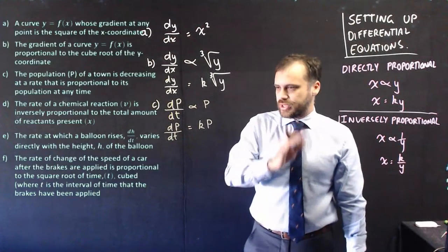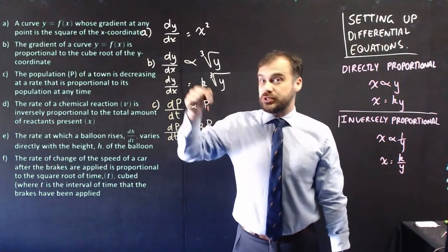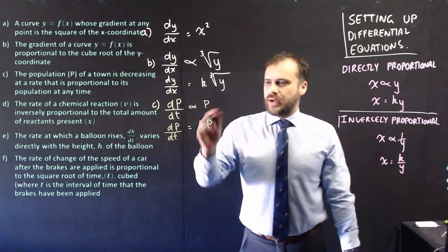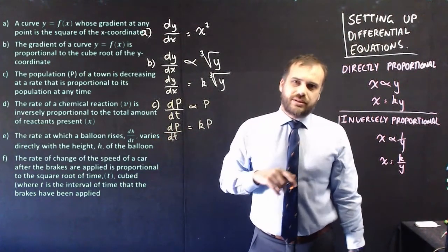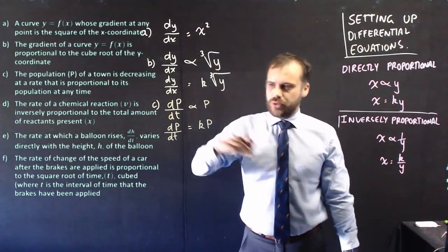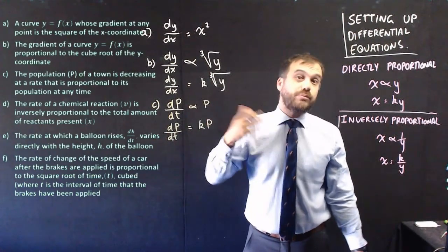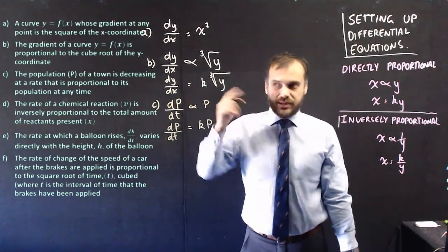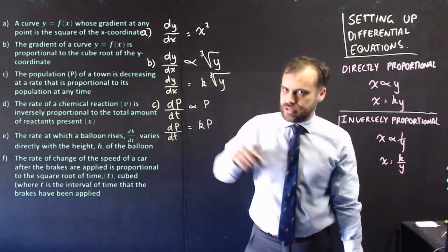Now, I just want to stop here for a second because it says that the population is decreasing at a rate with respect to time. That means that that k value is going to be negative. You don't need to write in negative k here. In a future video, we'll figure out what the value of k is if we've got more information. But for now, just write in kp. k could be positive or negative, but in this case, it's going to be negative because it's decreasing.